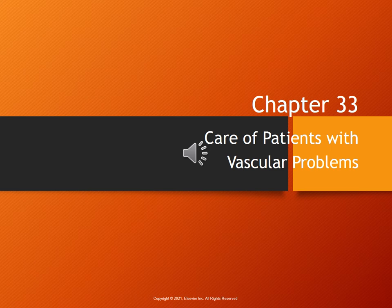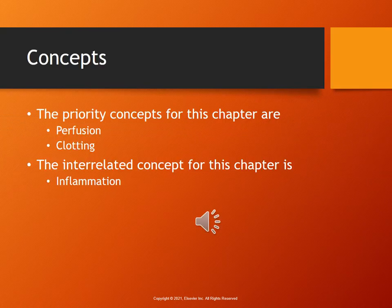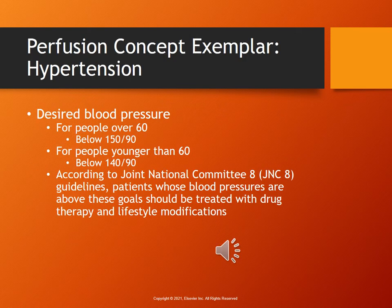Welcome to Chapter 33, Care of Patients with Vascular Problems. The priority concepts are perfusion and clotting with an interrelated concept of inflammation. The chapter begins on page 697, and page 698 goes over hypertension.